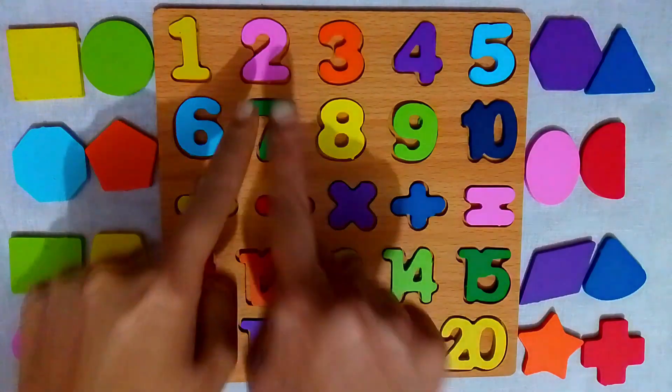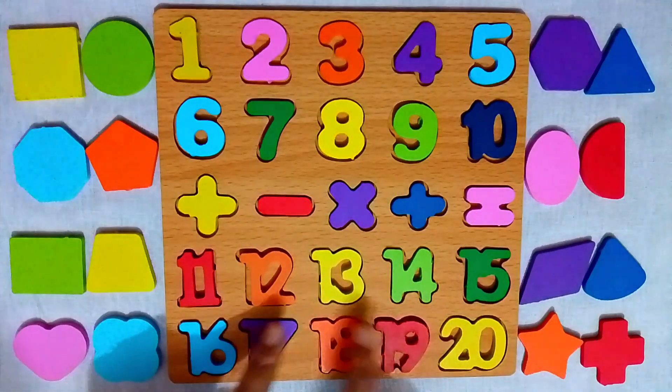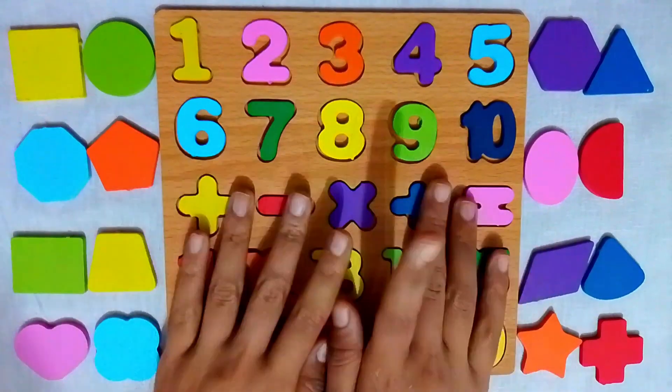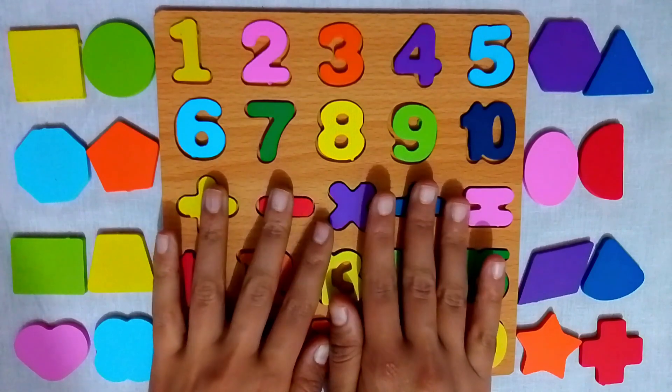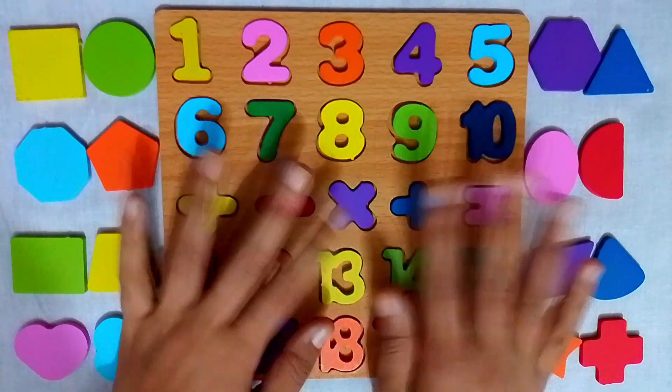Yay! We found all the missing numbers and placed them back in the right spots. Now our number line is complete from 1 to 20. Goal!